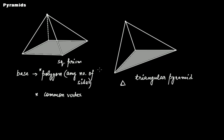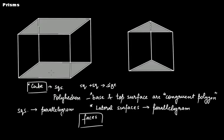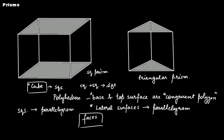In the same way, you can have a rectangular pyramid. We name a prism or pyramid using its base. You can have a square prism, a triangular prism, a rectangular pyramid, and so on. So basically, we name prisms and pyramids using the base. That is the basic definition of prisms and pyramids.